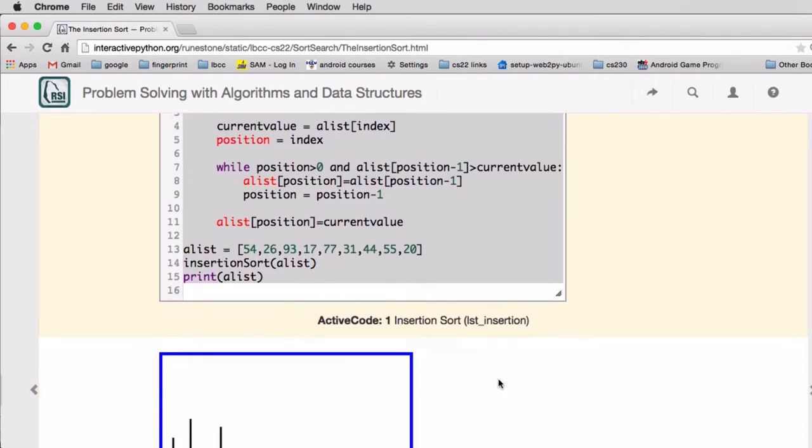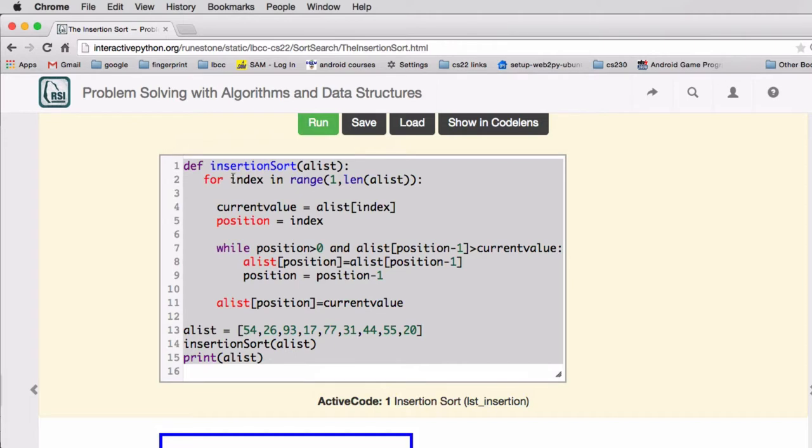So let's look at an animation. The code's pretty easy. You have the outer loop, which is picking the value that I'm going to insert. And then you have the current value that we're getting and remembering it.